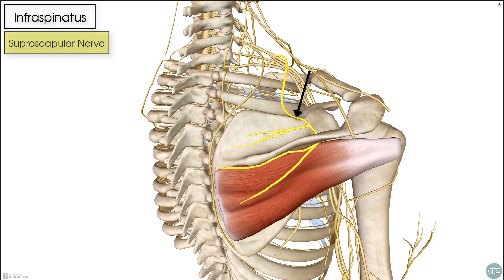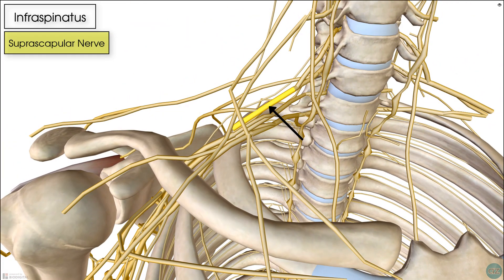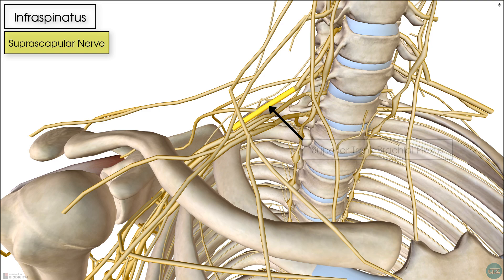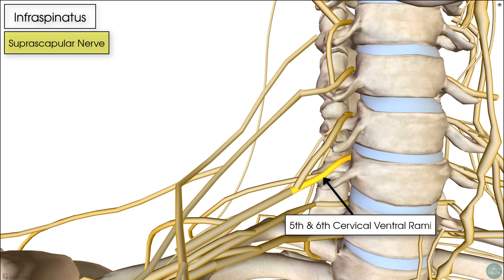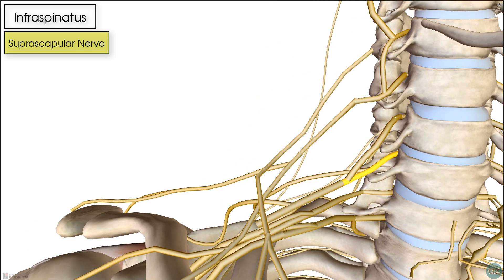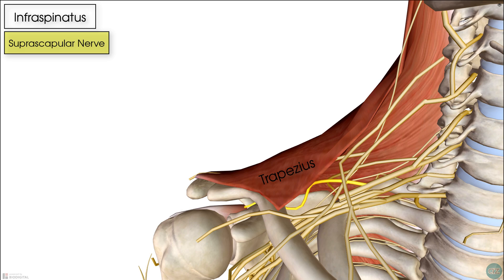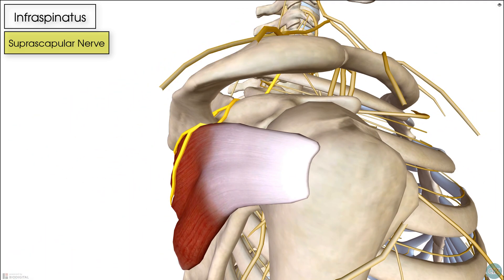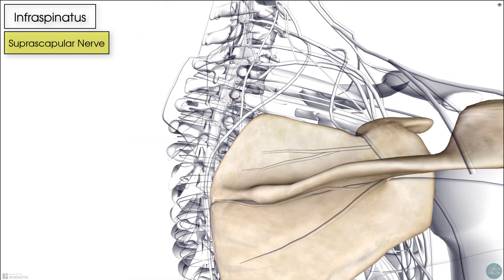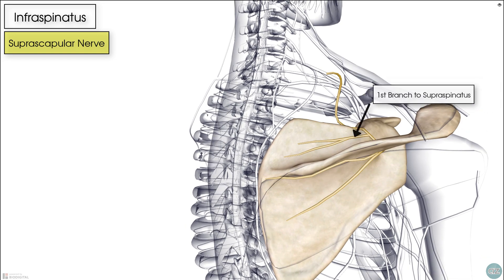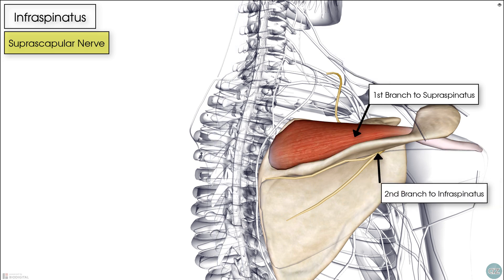The infraspinatus gets its nerve supply from the suprascapular nerve. This nerve arises from the upper or superior trunk of the brachial plexus, which is typically formed from the ventral rami of the 5th and 6th cervical vertebrae. The suprascapular nerve then runs underneath the trapezius muscle to reach the suprascapular notch, after which it gives off two branches: the superior branch goes to the supraspinatus muscle, whilst the second branch runs inferiorly to innervate the infraspinatus.